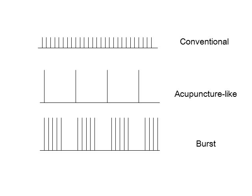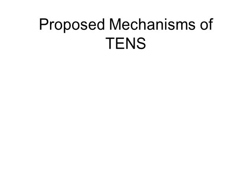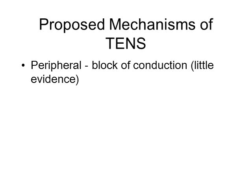TENS is proposed to work via a range of different mechanisms. It is proposed that stimulation of nerves — for example pain fibres — at frequencies above their maximum rates of conduction will lead to fatigue of the nerve and block of nerve conduction. The evidence for this suggests that it might only occur at very high frequencies and intensities that are 5 times what would normally be tolerated by humans. It is therefore unlikely to be an important mechanism clinically.